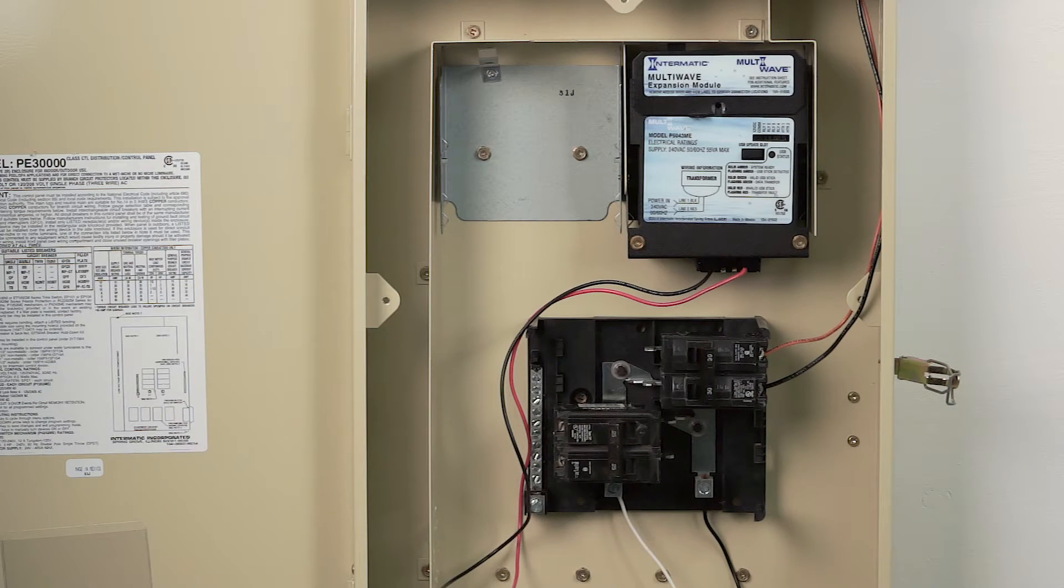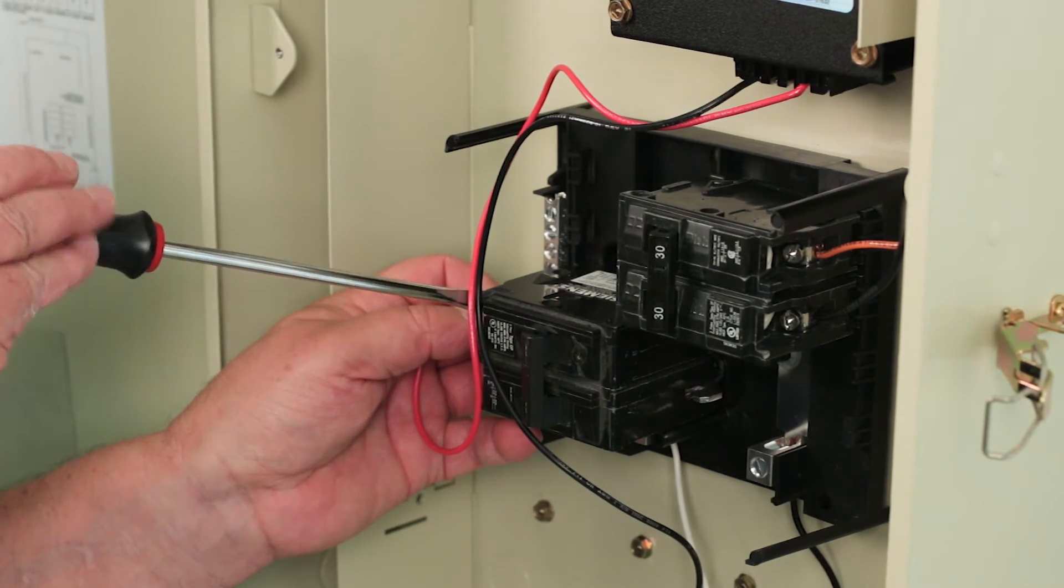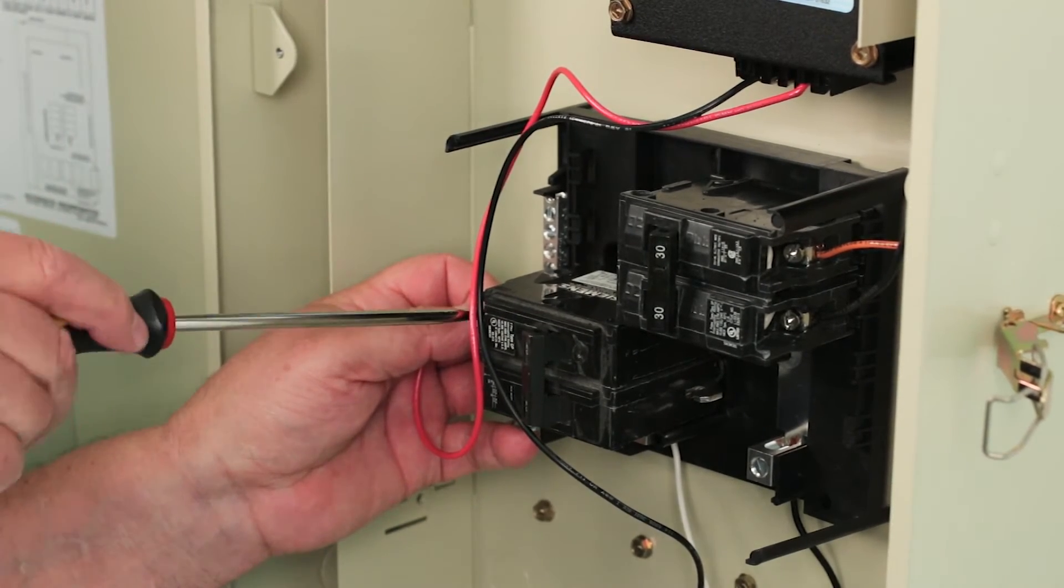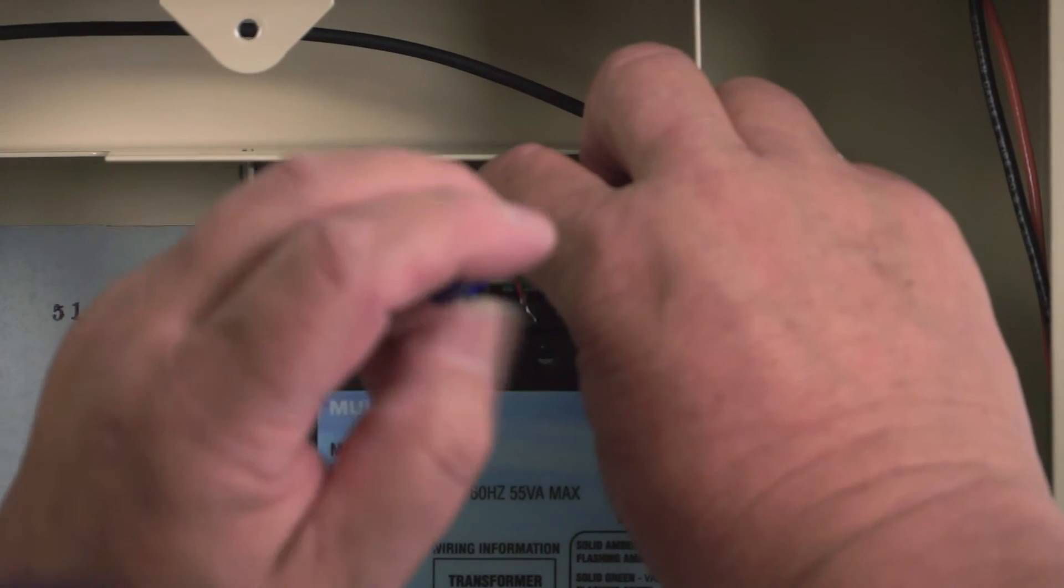We've snapped in the expansion module, which allows you to control two bodies of water. Connect the black and red wires from the module directly to a constant 240 volt power source. Now remove the top plate from the expansion module to establish the communication line to the receiver.